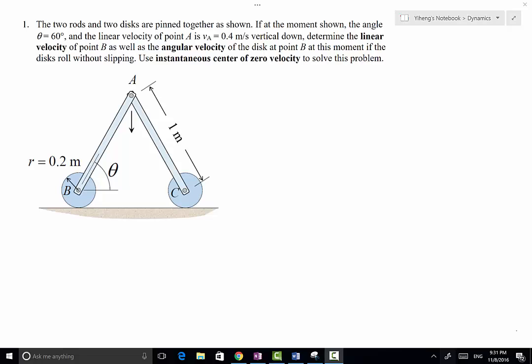In this problem we have two rods and two disks that are pinned together, and at this instant the angle theta is 60 degrees and the linear velocity of point A is 0.4 meter per second vertical down. We need to determine the linear velocity of point B as well as the angular velocity of the disk at point B. The disk rolls without slipping, and we're going to use the instantaneous center of zero velocity to solve this problem.